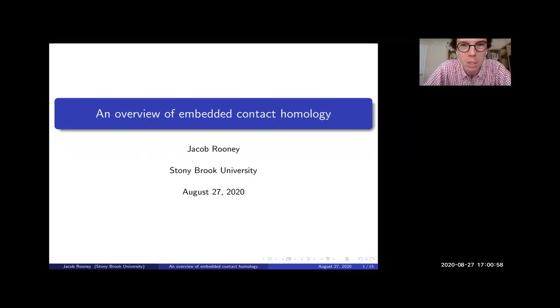Our seventh and final speaker is Jacob Rooney. He's a postdoc and a new postdoc at the Simon Center, and he got his PhD at UCLA in 2018. His title is an overview of embedded contact homology.